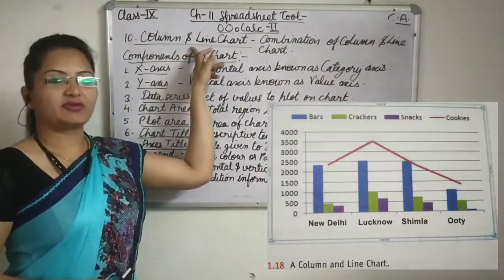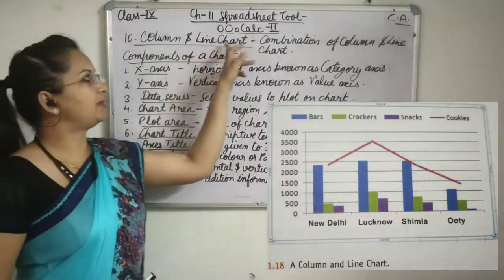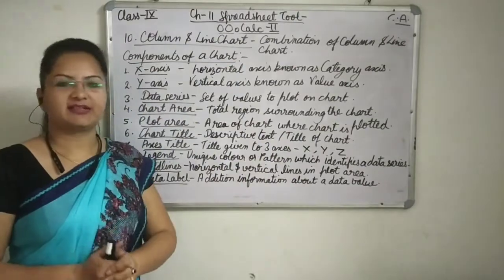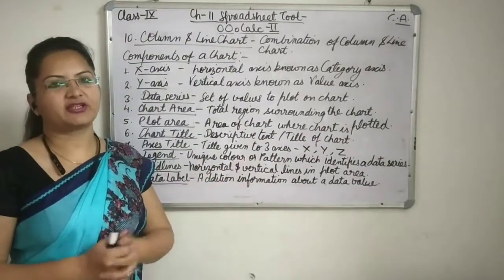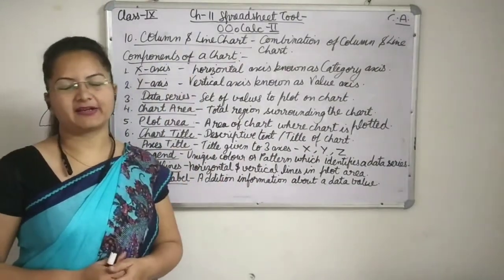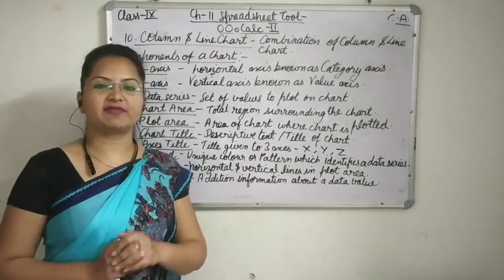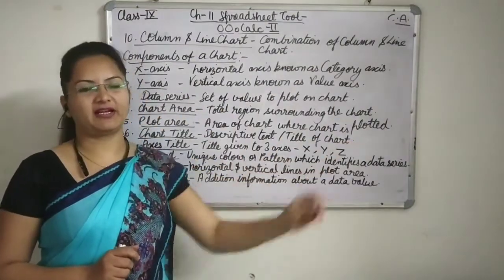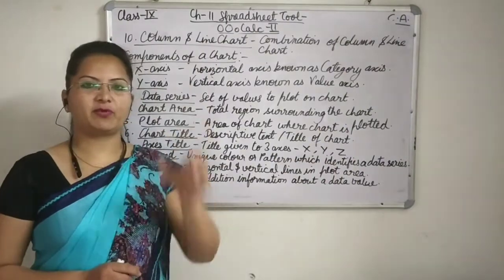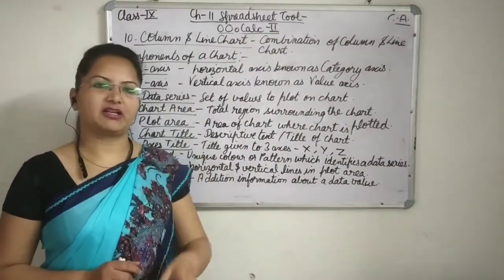Now students, there is one more chart — that is column and line chart. As the name suggests, it is actually the combination of both column chart and line chart. Data values are plotted on the graph and then they are joined with a line, and for every data series there will be a vertical column also.